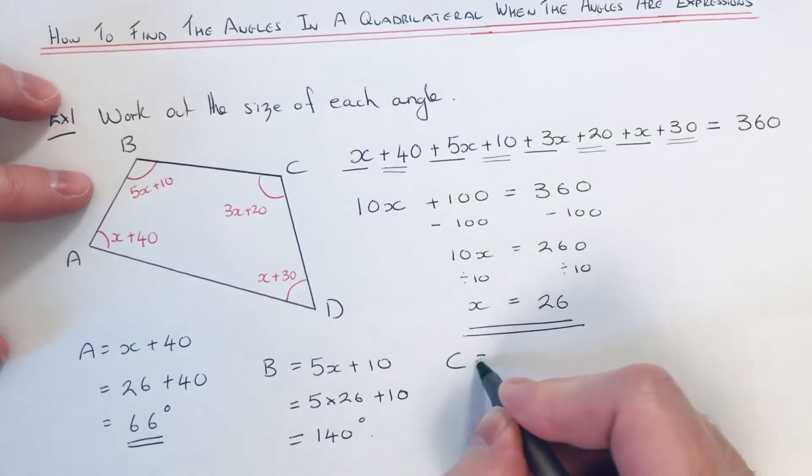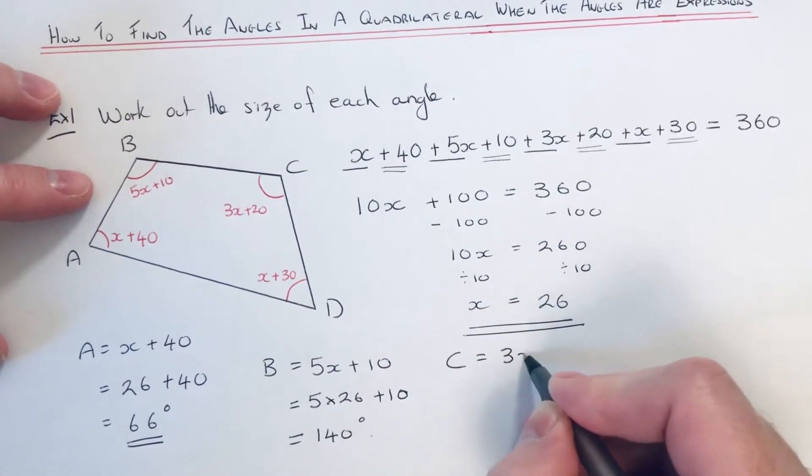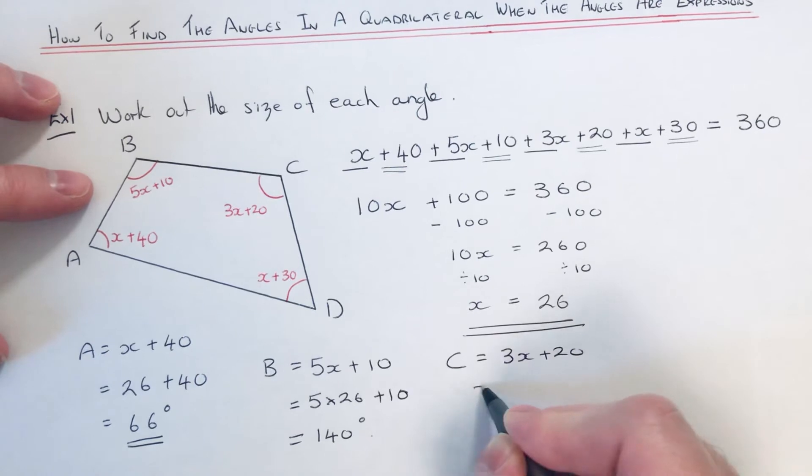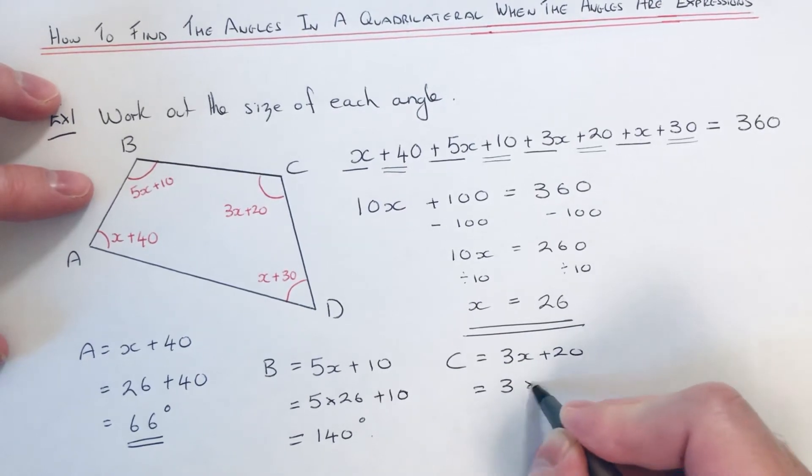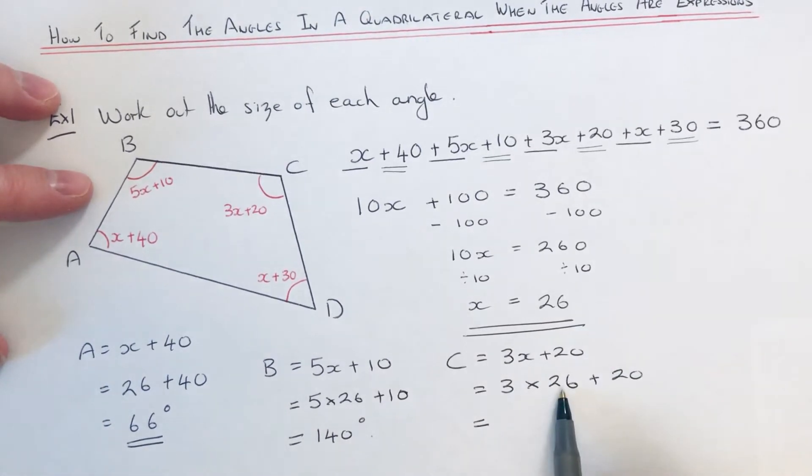Let's do angle C next. So 3x plus 20 is angle C. So that would be 3 times 26 plus 20. So 3 times 26 is 78, add 20 gives us 98 degrees.